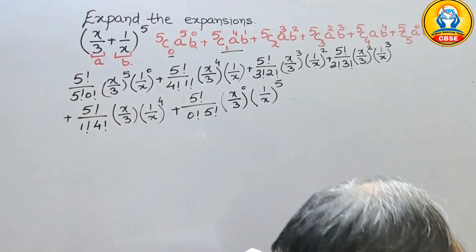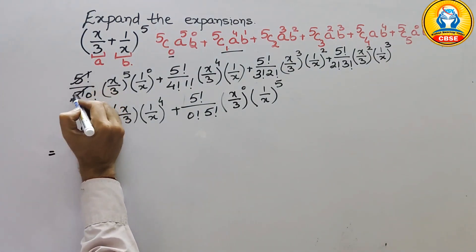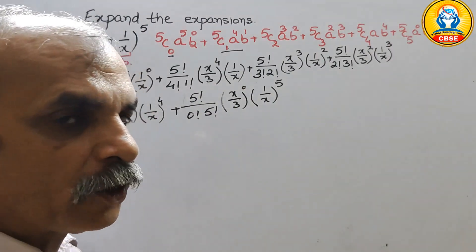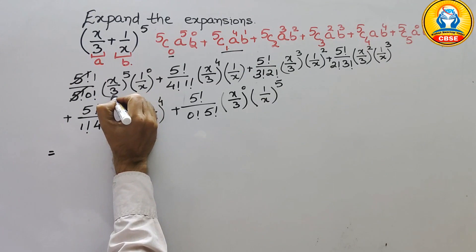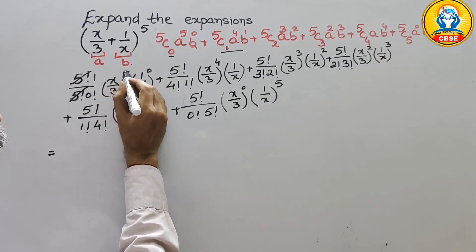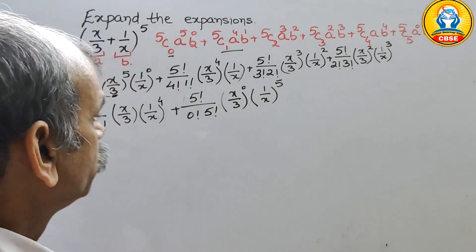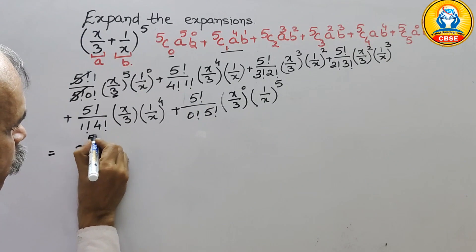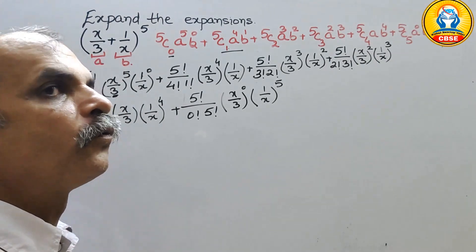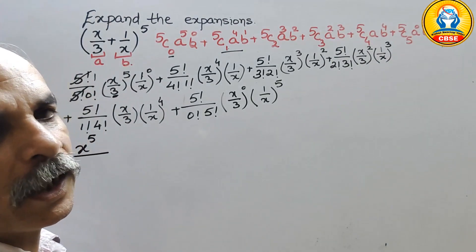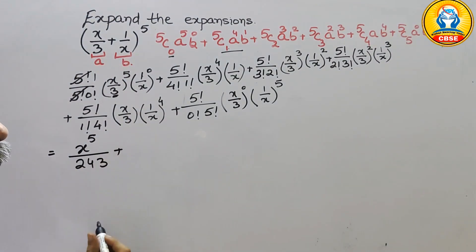Now we solve this. For the first term, 5 factorial divided by 5 factorial gives 1, and 0 factorial is 1, so it is just 1. So here we get x to the power of 5 divided by 3 to the power of 5, and 1/x to the power of 0 is 1.